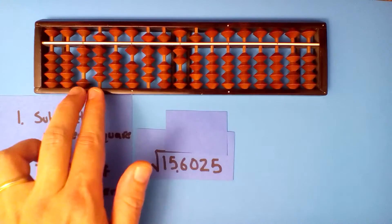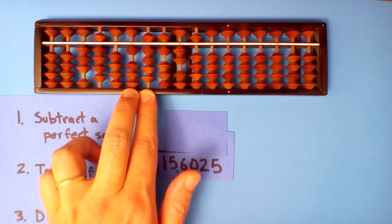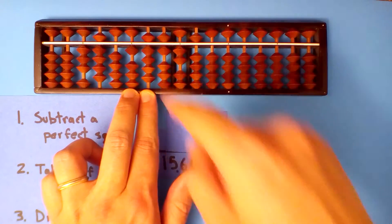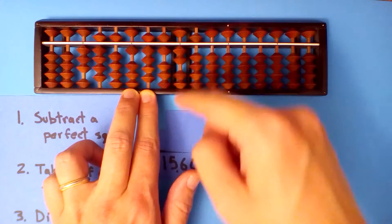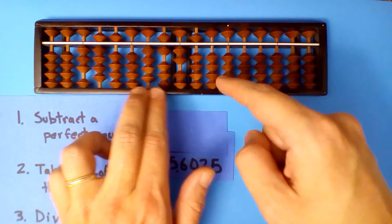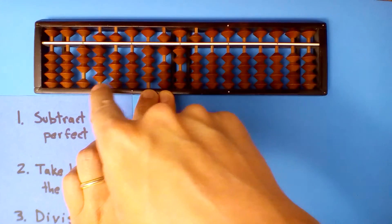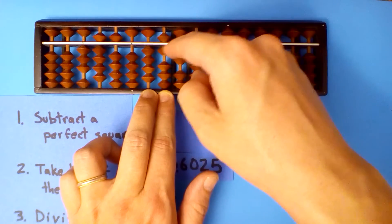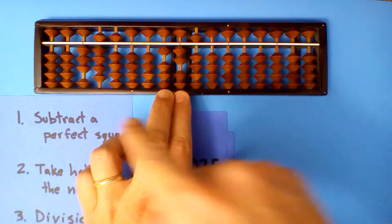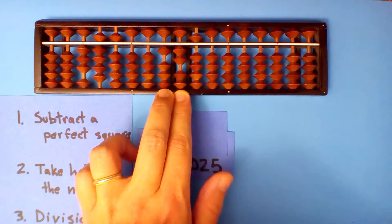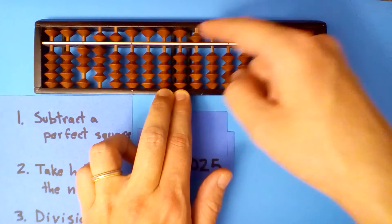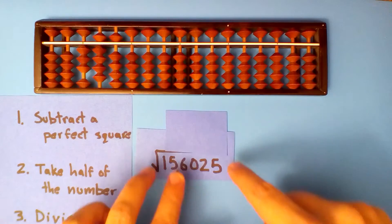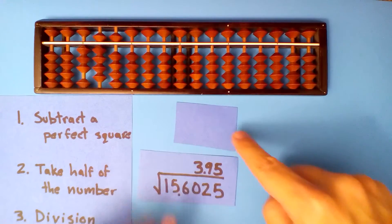How many times is 3.9 going into nineteen? Five times. Multiply and subtract. Five times three is fifteen. Five times nine is forty-five. Five times itself is twenty-five, and half of that is twelve point five. Our root is 3.95.